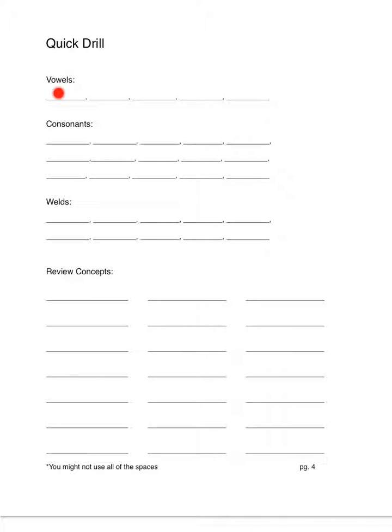Page four, quick drill. Write the vowel sounds that you hear: ah, ih, eh, ah, uh. Now for consonants — these could be single consonants, they could be blends, they could be digraphs, sometimes even triple blends. Listen carefully for blends that come at the ends of words as well. Here we go: ss, ya, er, tr, th, th, pl, str, xt, ch.